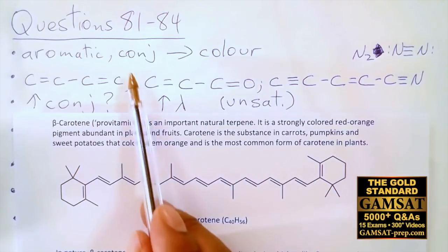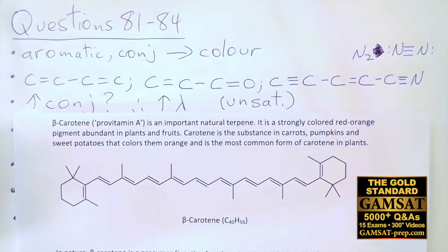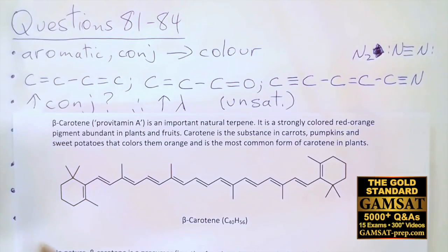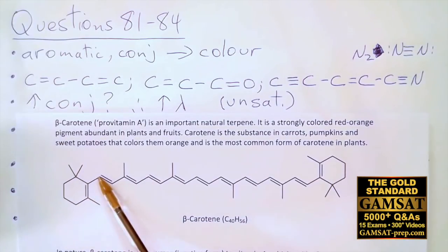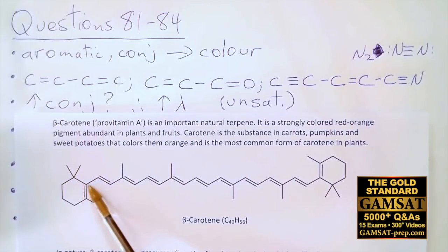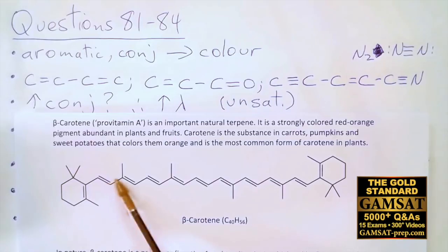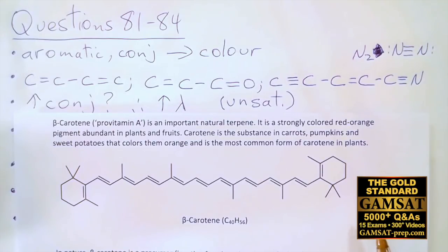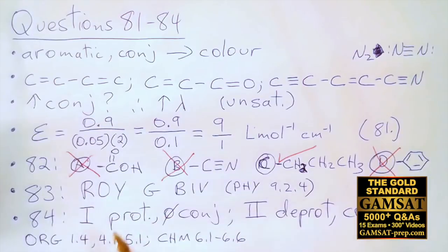Just for fun: do these double bonds look all-trans, all-cis, or neither? Hopefully you notice they are all-trans, which is energetically favorable. You have the main group and then a group opposite it — each time there's a double bond, the main group is opposite the smaller group, so the highest priority group is always opposite. This is all-trans, in other words all-E conjugation.